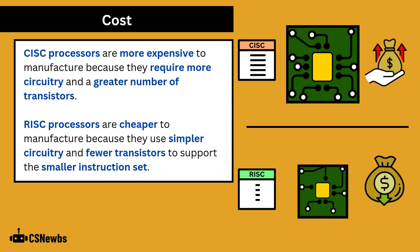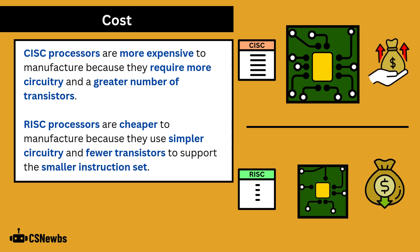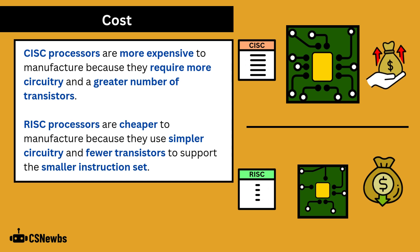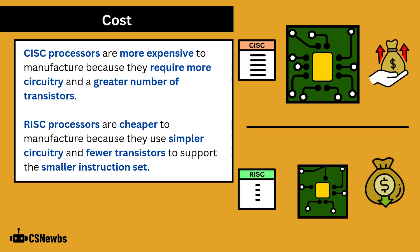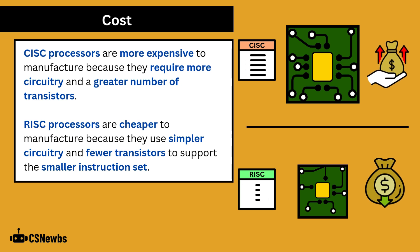CISC processors are more expensive to manufacture because they require more circuitry and a greater number of transistors. RISC processors are cheaper to manufacture because they use simpler circuitry and fewer transistors to support the smaller instruction set.